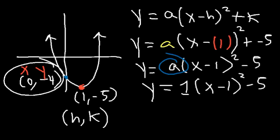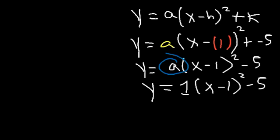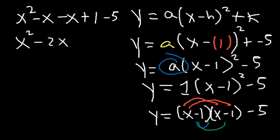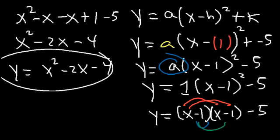Since the graph opens upward it's positive x². To convert from vertex form to standard form, expand (x minus 1)²: foil (x minus 1)(x minus 1) to get x² minus x minus x plus 1, which is x² minus 2x plus 1, then subtract 5. So in standard form it's x² minus 2x minus 4. If you're given a vertex and any other point — x-intercept or y-intercept — plug in x and y and solve for a to find the equation.